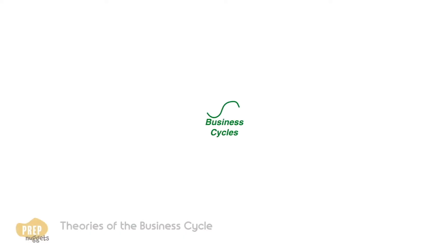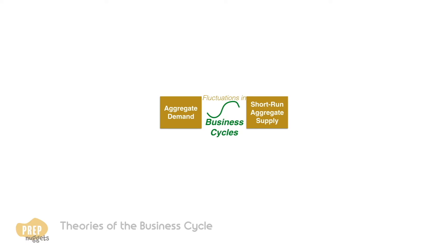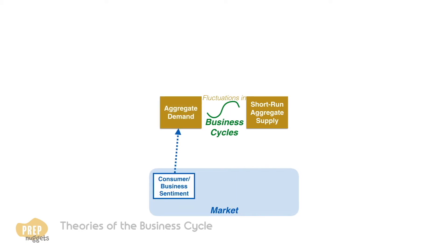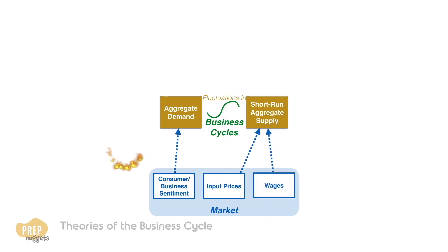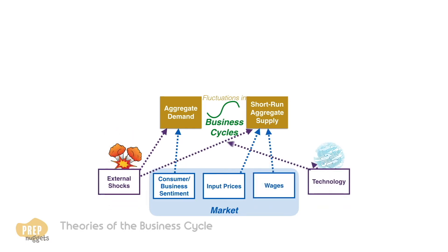Let's review what we've learnt regarding business cycles. Business cycles are a result of short-term fluctuations in aggregate demand and short-run aggregate supply, which are determined by market forces. Shifts in aggregate demand are mainly due to factors such as consumer and business sentiment, while shifts in short-run aggregate supply are mainly driven by cost factors such as input prices and wage levels. External shocks and changes in technology can also affect demand and supply significantly.